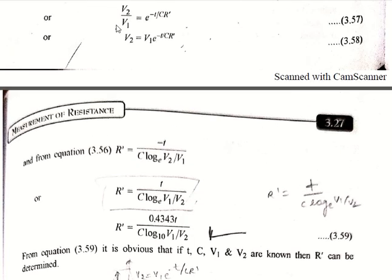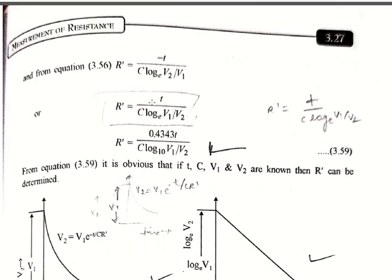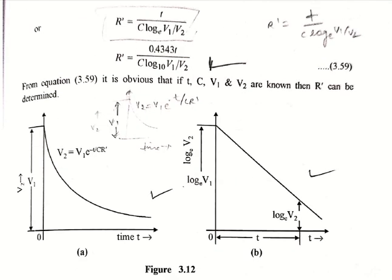From equation 3.58 we can draw an exponential graph of voltage V2 versus time T. The equation is V2 = V1·e^(−T/CR'). Here V1 is the intercept on the voltage axis, and this is an exponentially decaying graph.